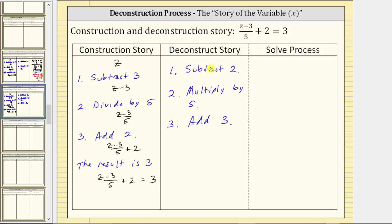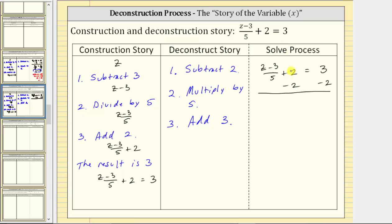Now we will perform the operations of the deconstruction story on the given equation in order to solve it. We begin with the given equation, and the first step is to subtract two on both sides. So minus two on the left, minus two on the right. Simplifying, plus two minus two simplifies to zero. We now have the quantity z minus three divided by five is equal to three minus two, which equals one.